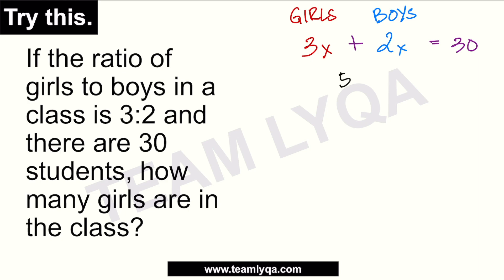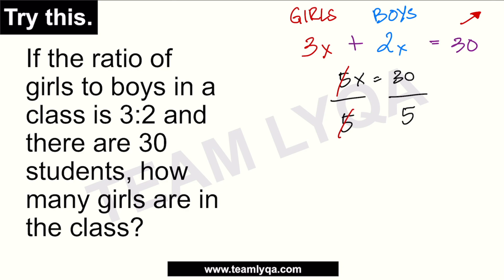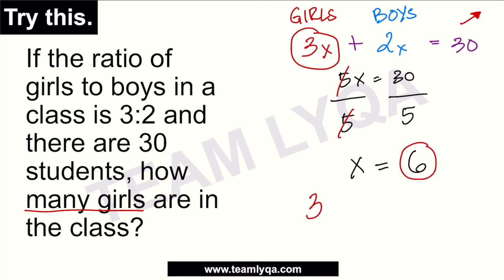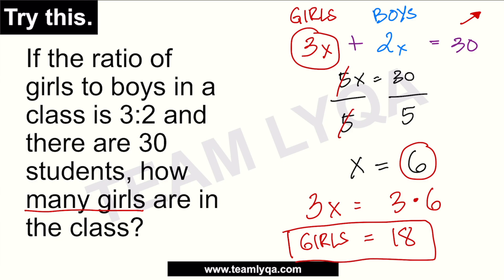Kung isosolve na natin ito, this will be 5x is equal to 30. To find x, divide both sides by 5. So, x is equal to 30 divided by 5, which is 6. 6 na yung pinaka-factor natin. To find 3x — which is the number of girls — substitute x = 6: 3x is equal to 3 times 6. So, ibig sabihin nun, ang number of girls sa klase is 3 times 6, which is 18. It's the same answer whether we used the table or this formula.